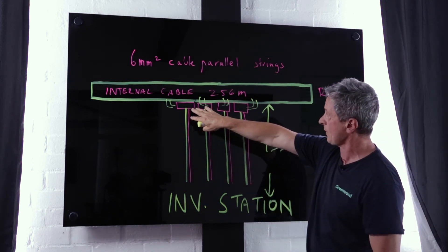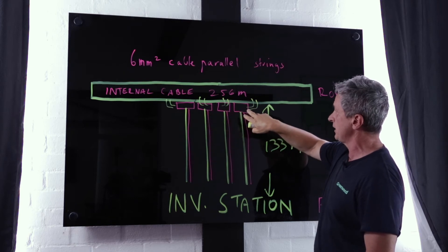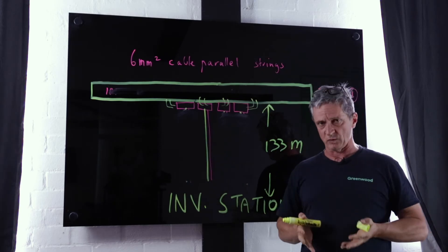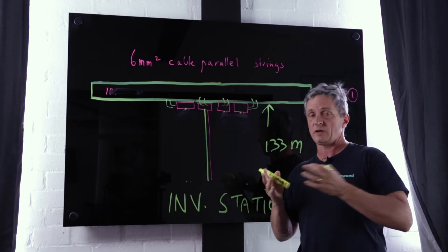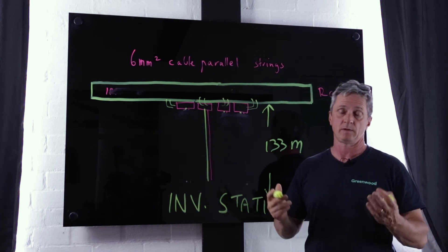We're looking at 6mm cable and we're looking at parallel strings. So straight away instead of the 10 amp amount, we're looking at 20 amps, two strings parallel together.